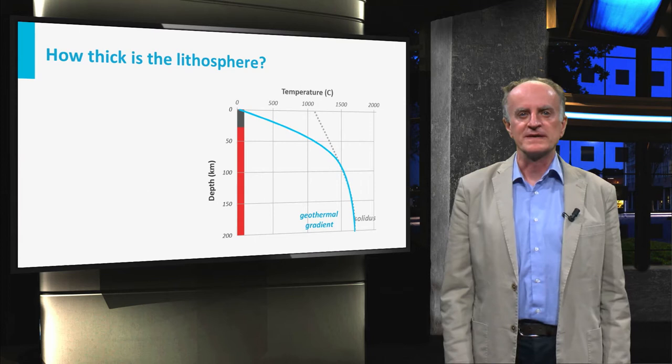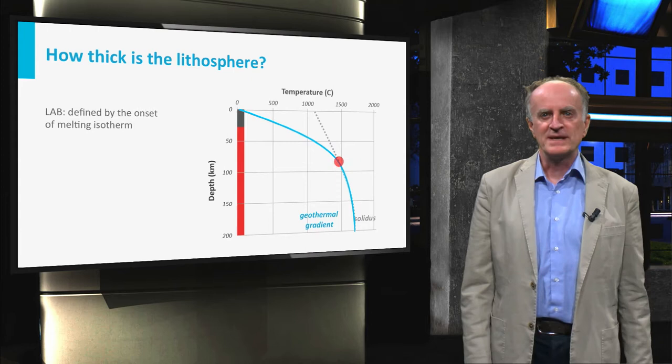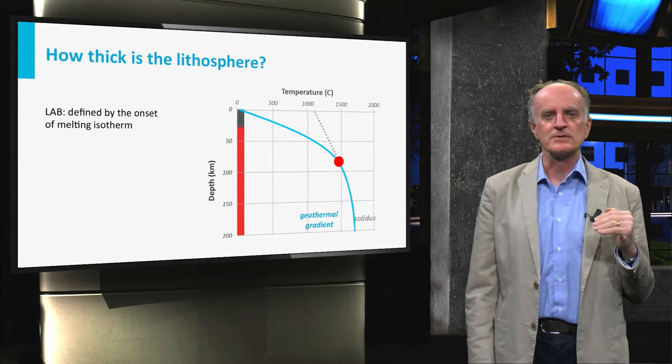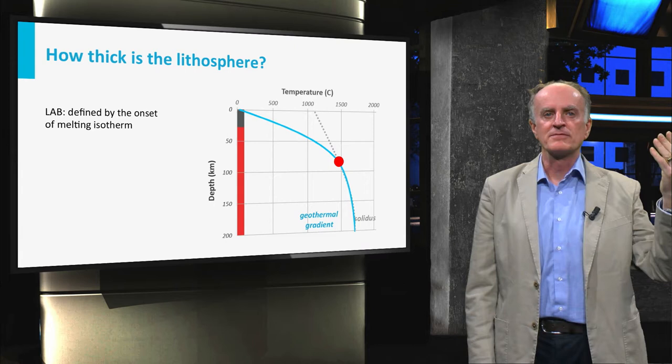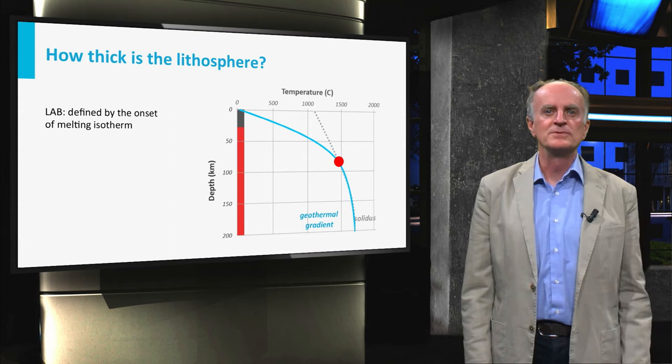How thick is the lithosphere? Is its depth constant over the entire Earth? In the previous class we have seen that the boundary between the asthenosphere and the lithosphere corresponds to the isotherm separating fully solid rocks above from partially molten rocks below. This temperature is usually assumed to be 1300 degrees.